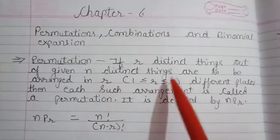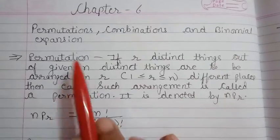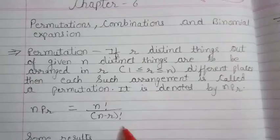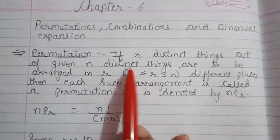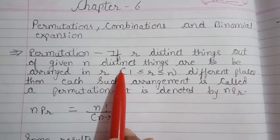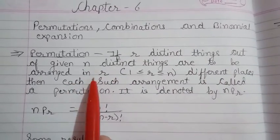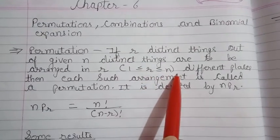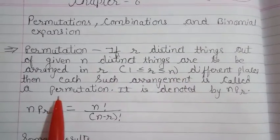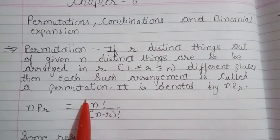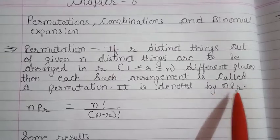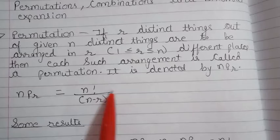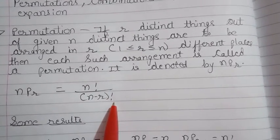Hello students. In our last discussion we discussed about permutation and combination. Let us quickly revise it. Permutation: if r distinct things out of given n distinct things are to be arranged in r different places, where 1 is less than or equal to r and r is less than or equal to n, then each such arrangement is called a permutation. It is denoted by nPr. The formula for nPr is n factorial upon n minus r factorial.